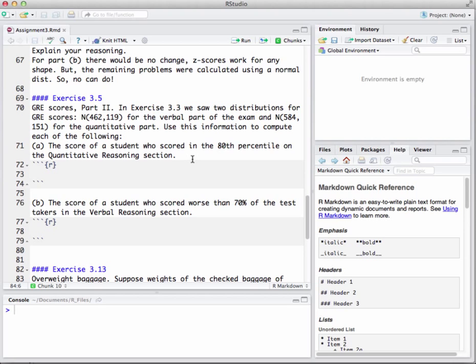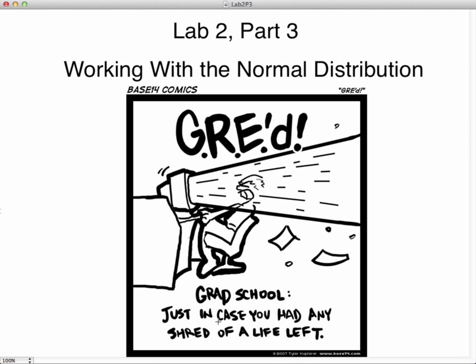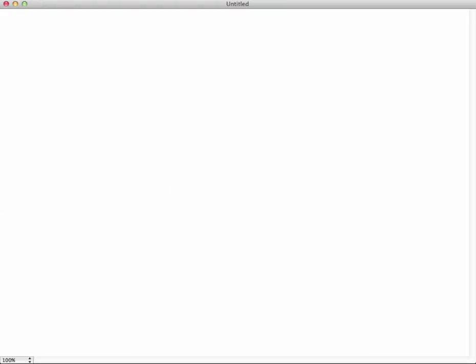Before we get going on these problems, I want to go back over to the whiteboard for a moment and I'll have a little discussion about quantiles versus percentages or probabilities. Let's do that real quick here. Let's open up a whiteboard here and let's draw ourselves just a generic normal distribution for a moment.